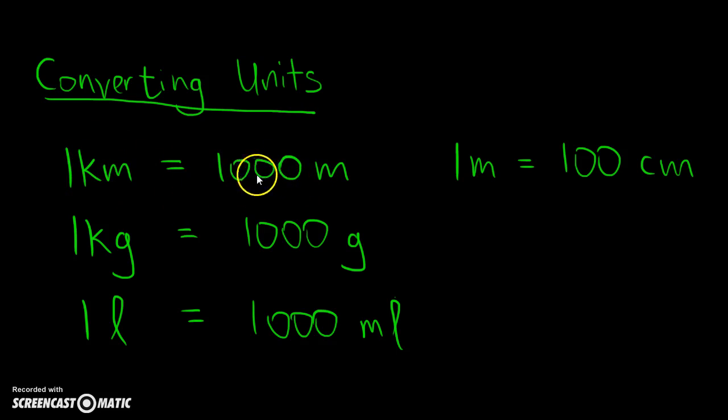For example, for kilometer, one kilometer gives you 1,000 meters - that's three zeros. So the bigger unit gets you 1,000 of the smaller units. The same for kilograms - the bigger unit gives you 1,000 of the smaller unit. And for liters, one liter gives you 1,000 milliliters.